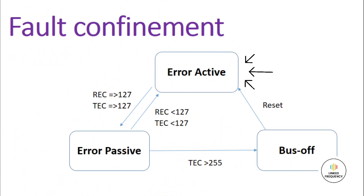The first state is the error active state. If both the TEC and REC count are less than 127, the CAN node is in the error active state. By default, all CAN controllers will be in error active mode. In this state, a CAN node is functioning normally and actively participating in communication on the bus. The node can transmit and receive messages without any issue, and it can raise an active error flag when detecting an error.